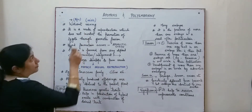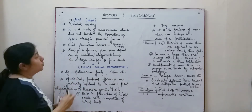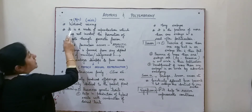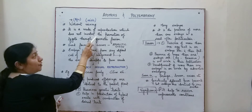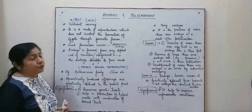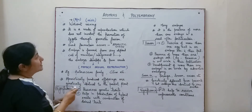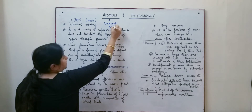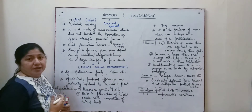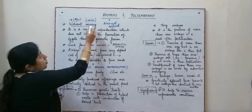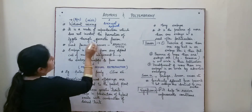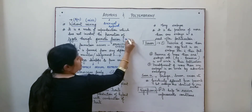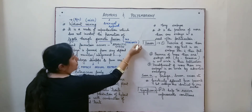The word apomixis has been taken from a Greek word that means without mixing — 'apo' means without and 'mixis' means mixing. It is a mode of reproduction which does not involve the formation of a zygote through gametic fusion. Apomixis is also a type of asexual reproduction which takes place in sexually reproducing plants, and there is no mixing of gametes and no formation of the zygote or gametes by meiosis.